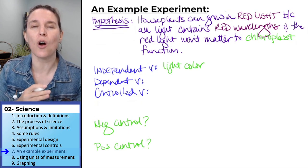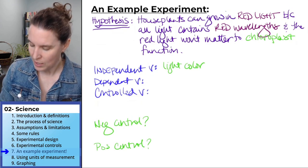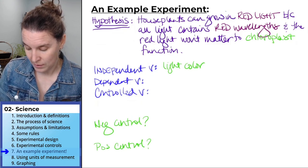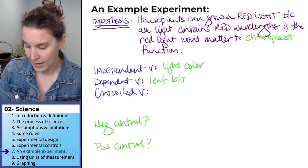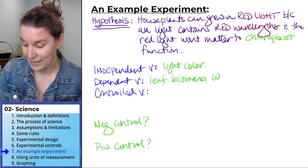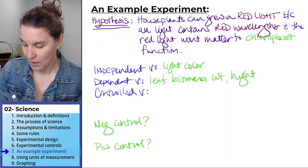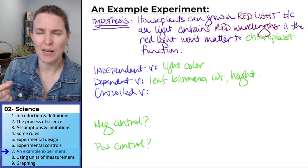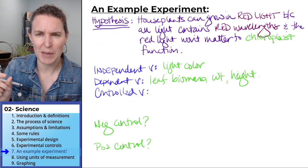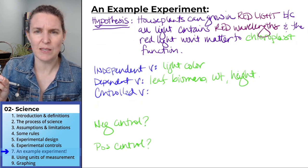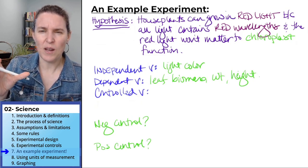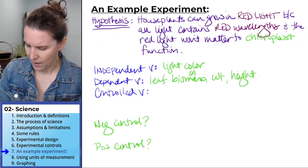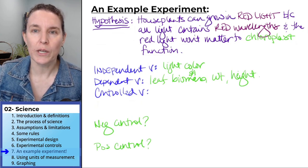Our dependent variables are all the things that we can measure to indicate growth. And again, we can go all day long: leaf biomass, weight, height. I said leaf biomass, that implies like the amount, but like maybe, I guess I want like surface area, leaf surface area. I want that included in there. We could go all day long.